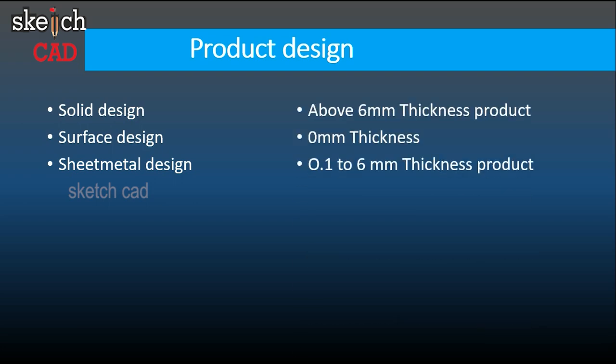For example, we use a 6mm thickness. This is a solid component, so it is not a 0mm thickness. For example, we draw a complicated shape. This is a solid component, this is a surface design, this is a sheet metal design — with a 0.1mm to 6mm thickness range.